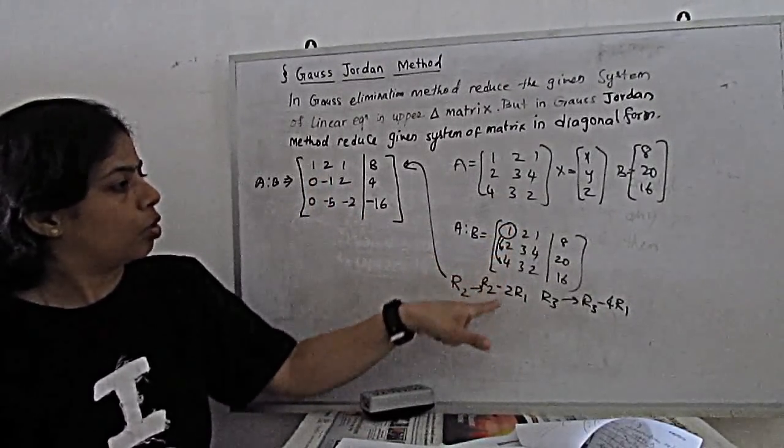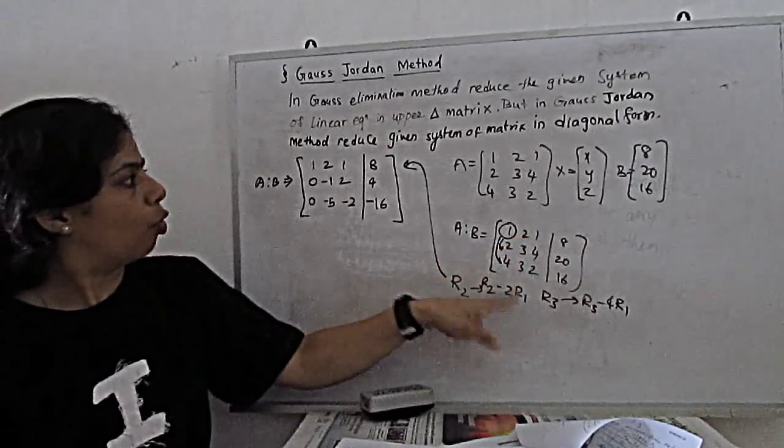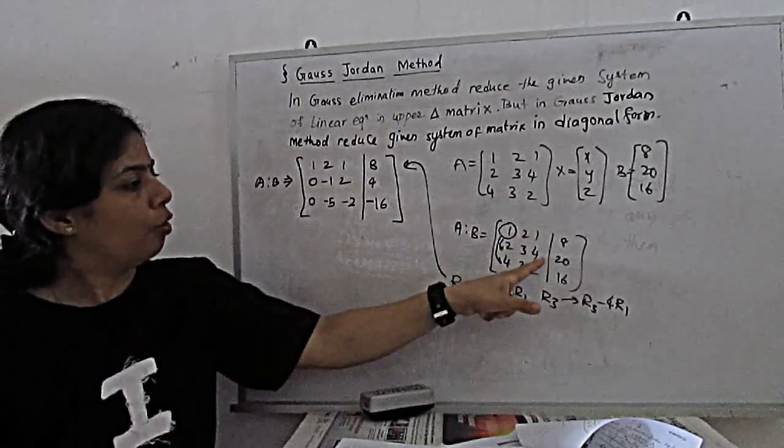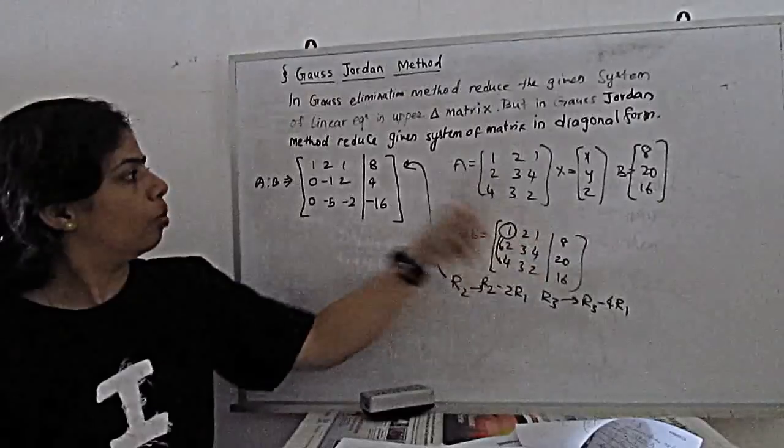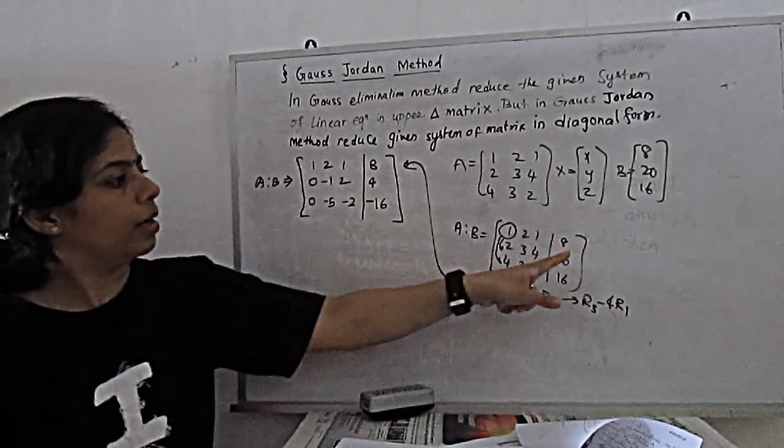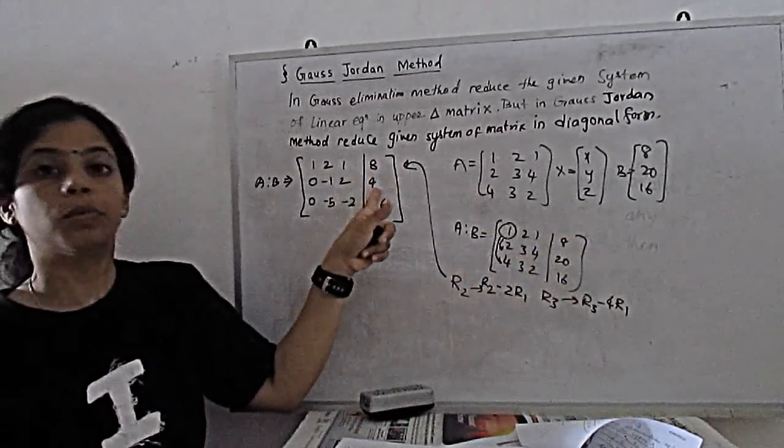So this, 2 minus 2 is 0. 3 minus 4 becomes minus 1. 4 minus 2 becomes 2. And 20 minus 16 becomes 4.